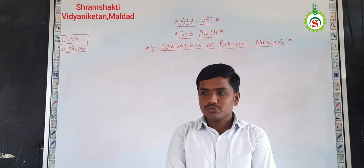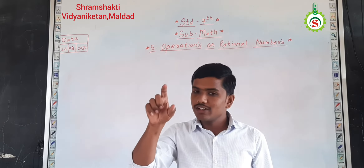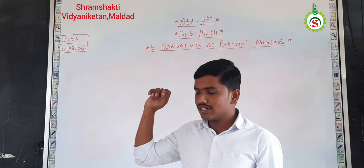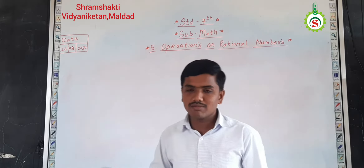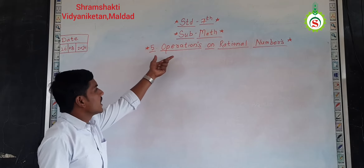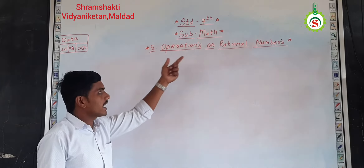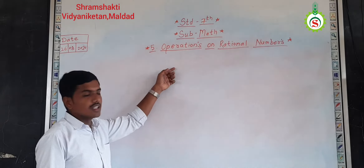So, the number which contains a numerator and denominator — those numbers are nothing but the rational numbers. So, various operations we have to see on the rational numbers.